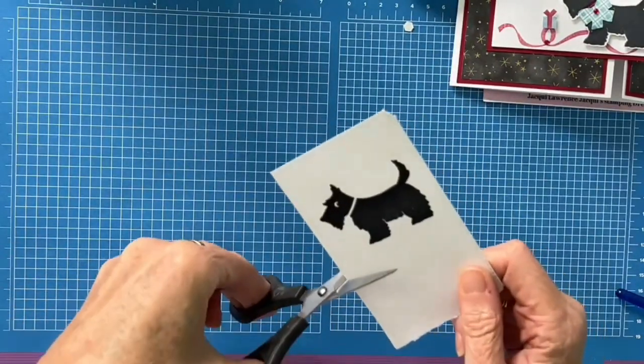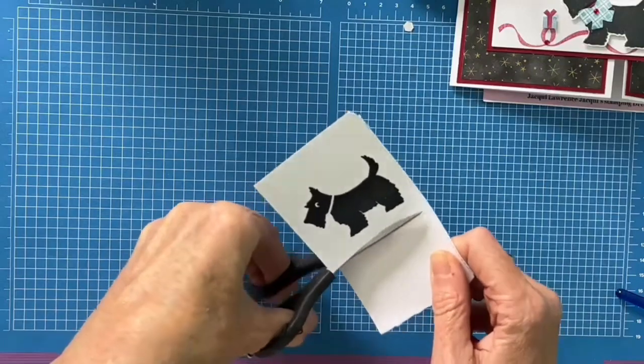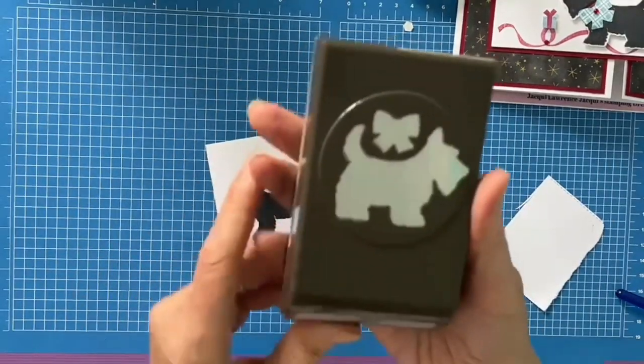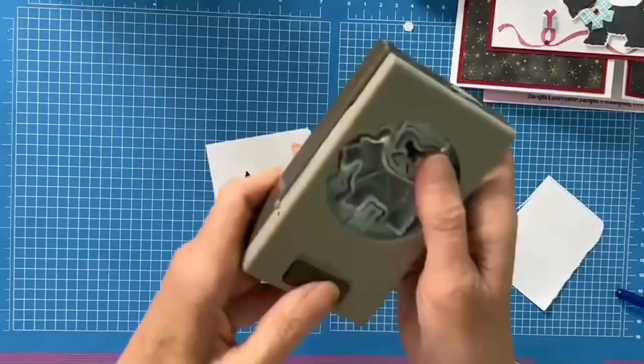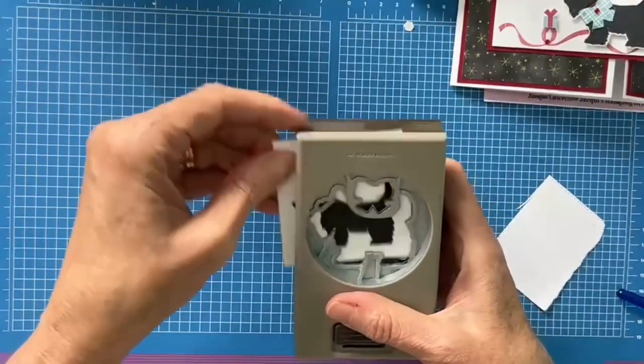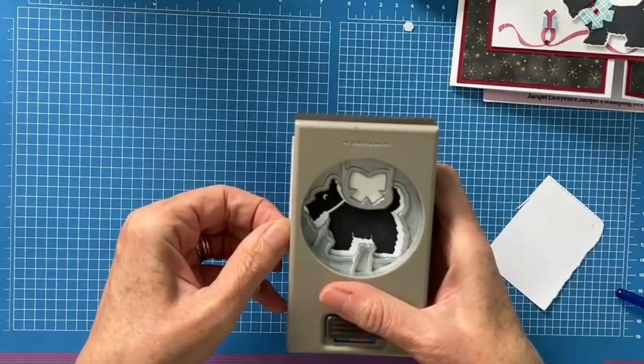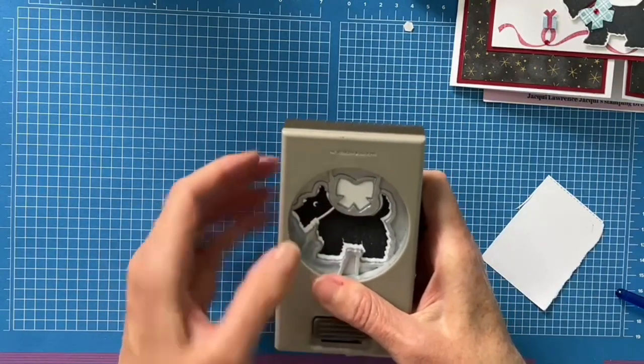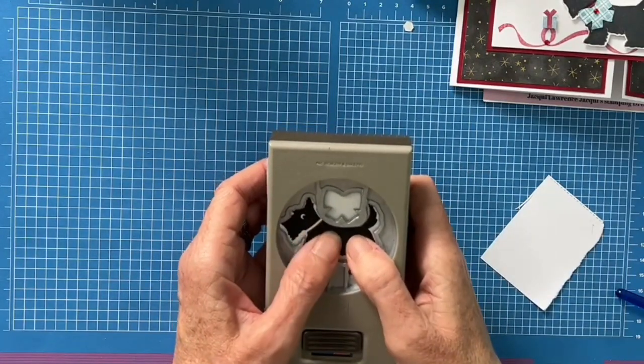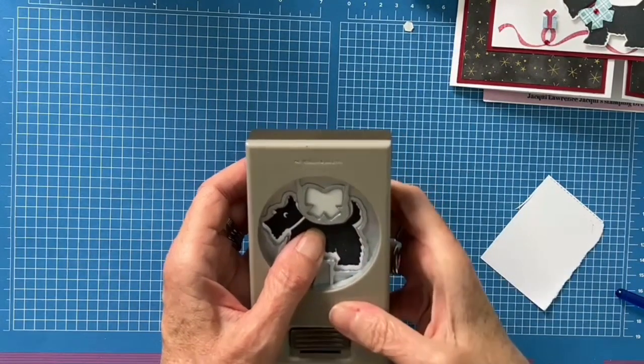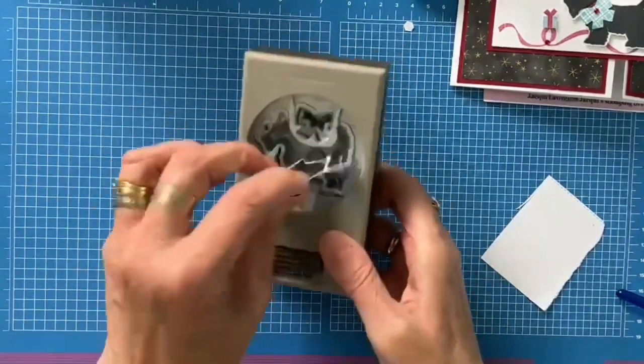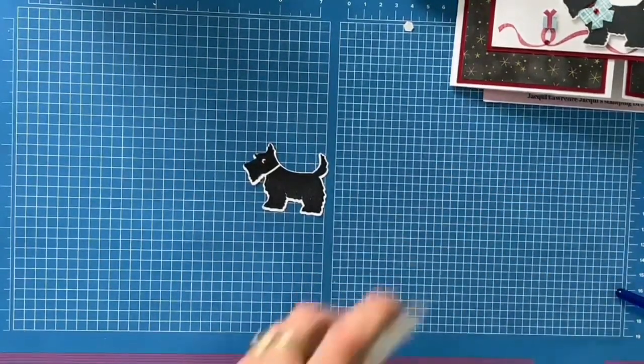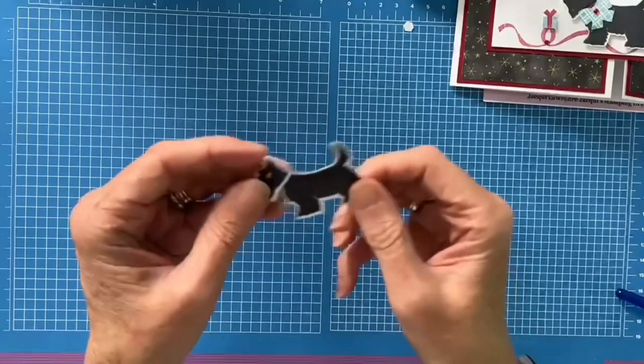So I am just going to put that to one side. And then getting my paper snips. I am just going to trim my card. And then bringing in the builder punch. That can go in like so. Line him up. And then punch. And there we have got our lovely little Scotty Dog.